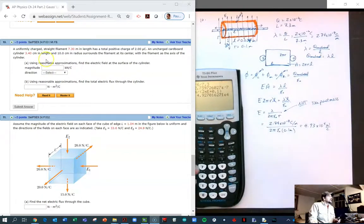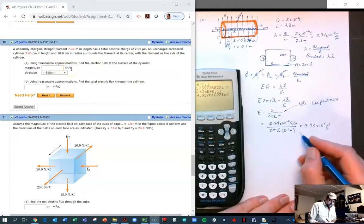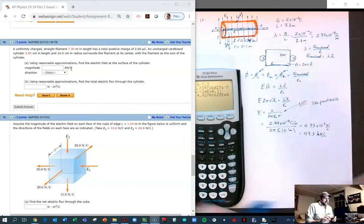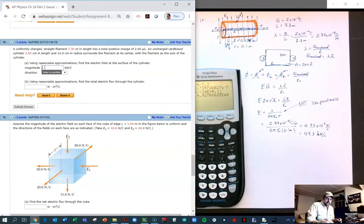This gives me 4.93 times 10^4 and this is going to be newtons per coulomb. But of course WebAssign does not want that—it wants kilonewtons per coulomb, so this is going to equal 49.3 kilonewtons per coulomb. Because the charges are all positive, it's going to be radially outwards. Let's see if we get that right: 49.3 and radially outwards. Yay!